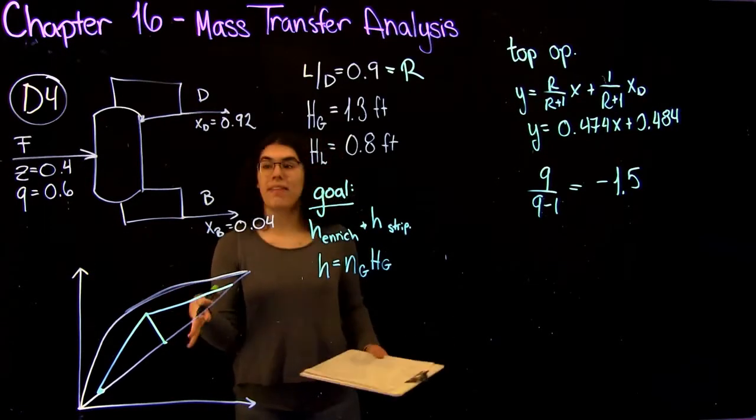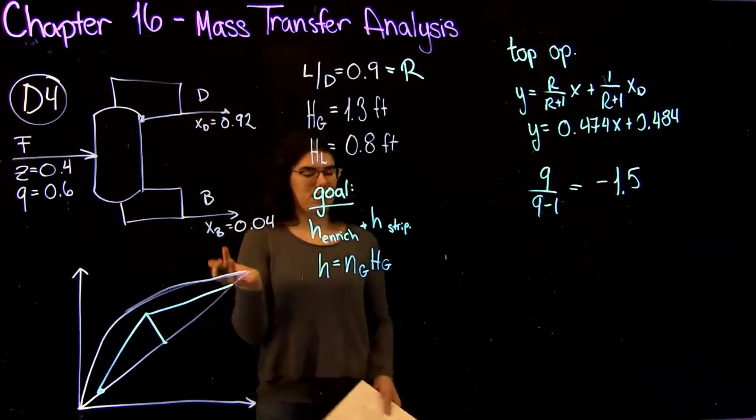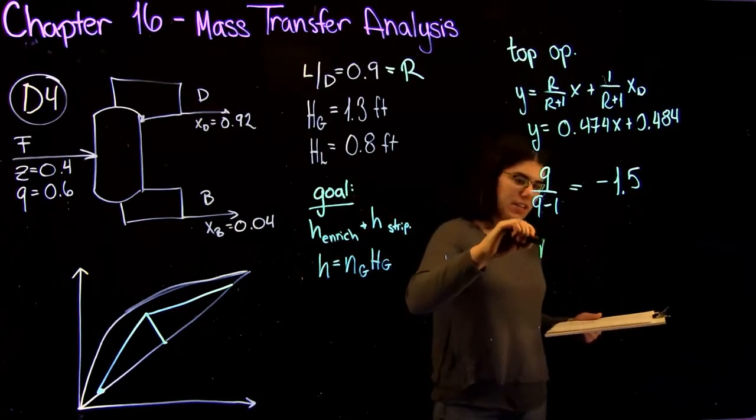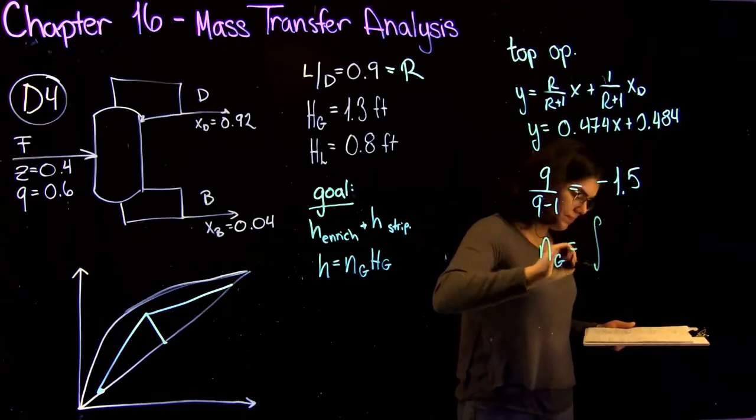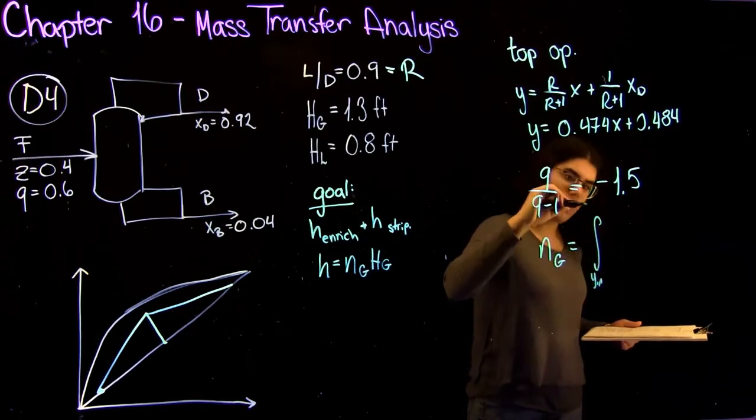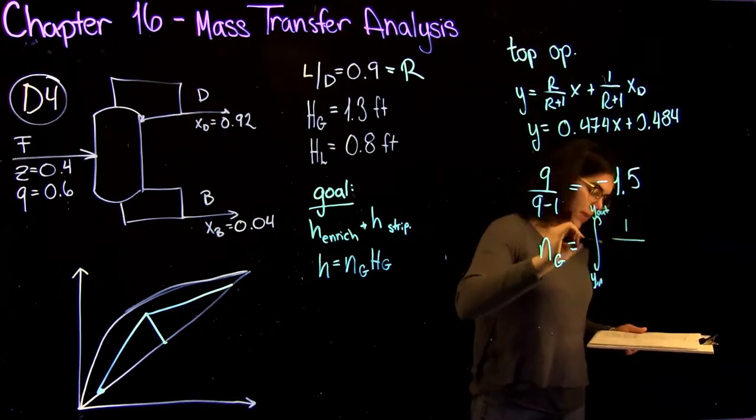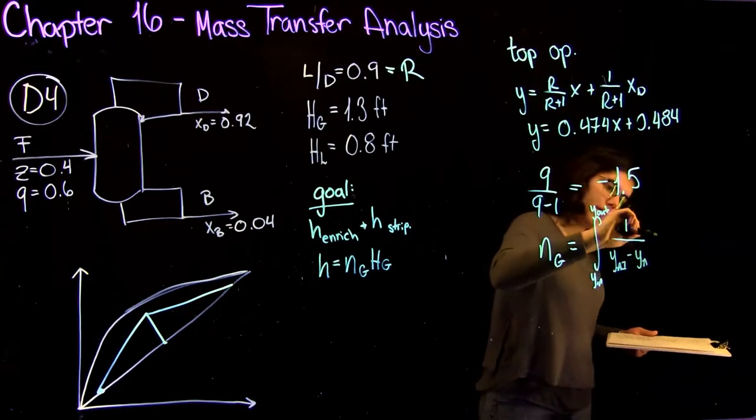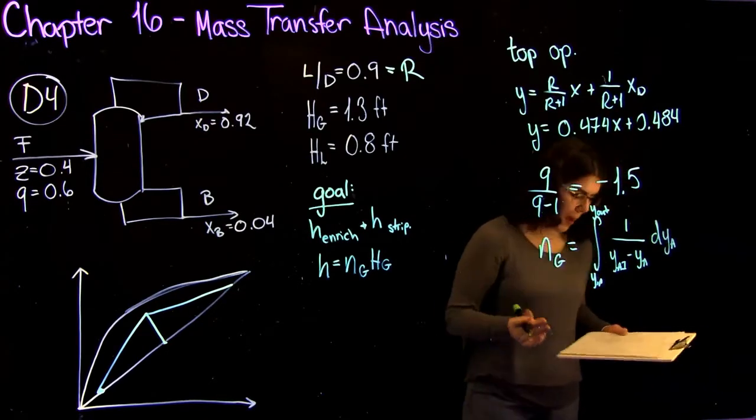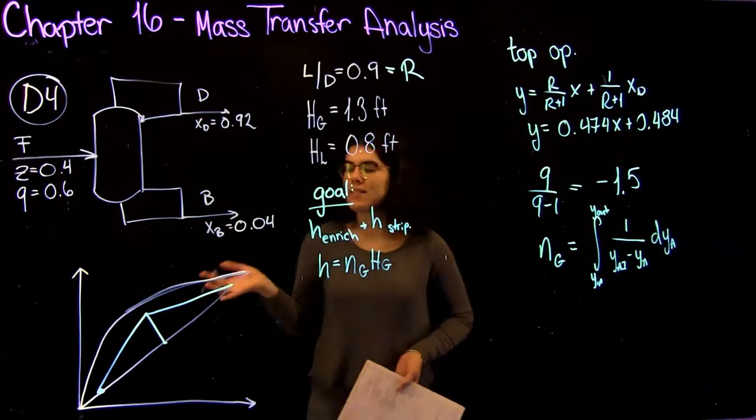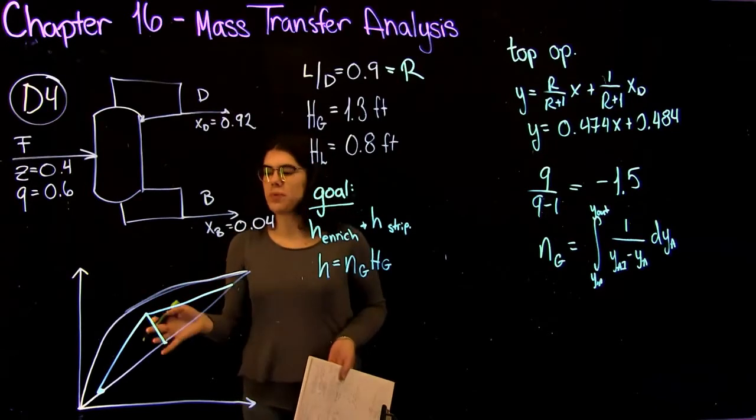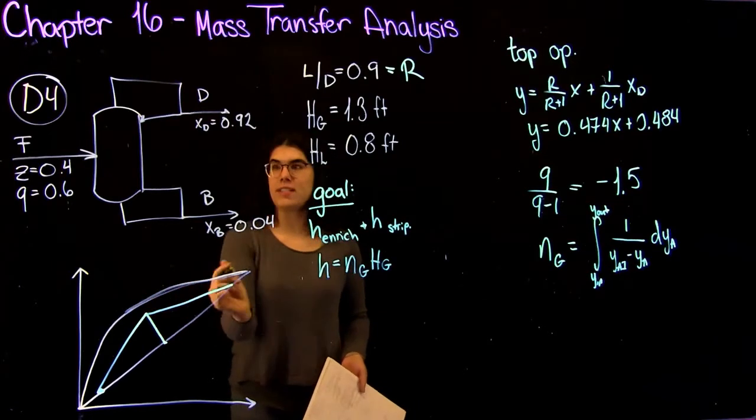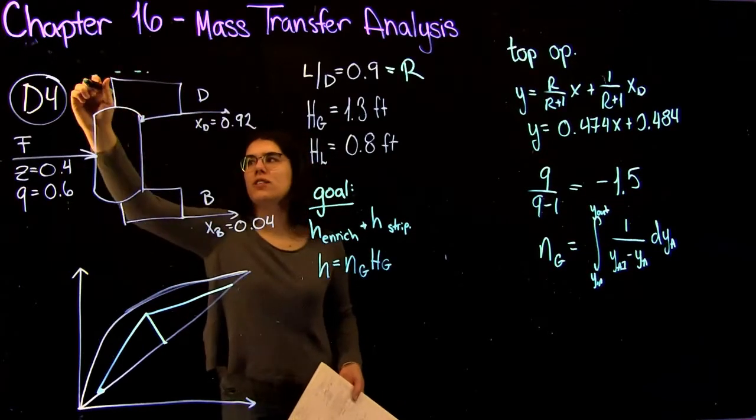The next step that is new is we're going to have to plot our mass transfer lines in order to find the value of Ng. Ng is defined using this integral: the integral from Y in to Y out of 1 over YAI minus YA dYA. Since we're asked to find both the height of the enriching and stripping section, we're going to tackle one section at a time. I'm going to right now look at the enriching section, or in other words, the top section of your column.